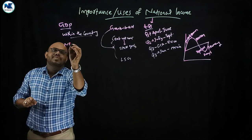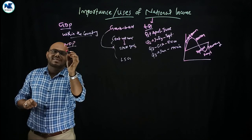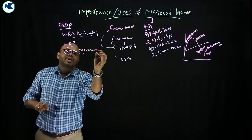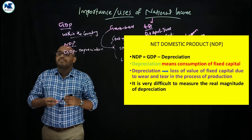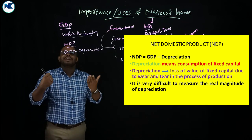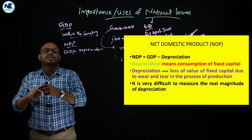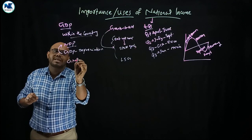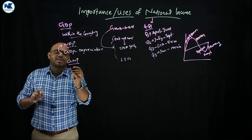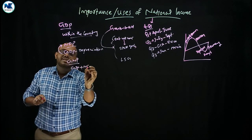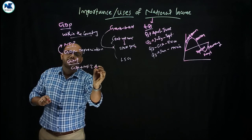NDP is Net Domestic Product, which equals GDP minus depreciation. Depreciation is also called consumption of fixed capital. GDP minus depreciation gives you NDP. The concept of GNP — Gross National Product — is also simple: GNP equals GDP plus net factor income earned from abroad. Net factor income from abroad is the difference between income remitted by Indians working abroad and income earned by foreigners in India.